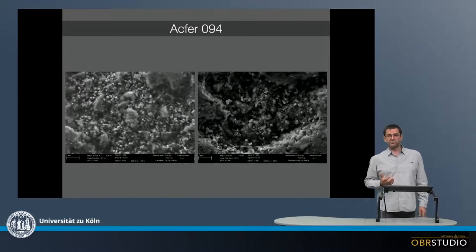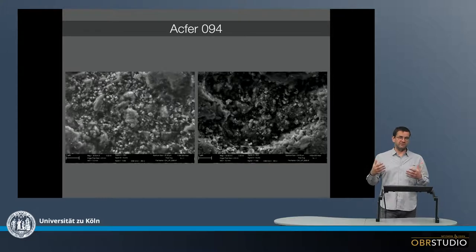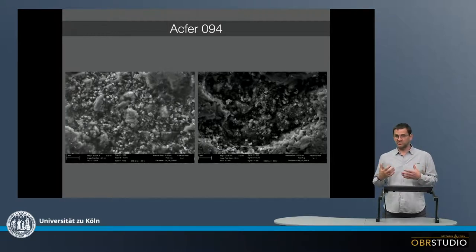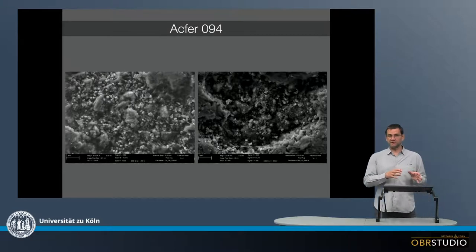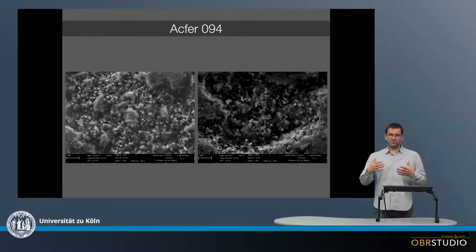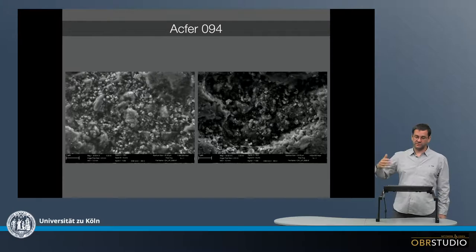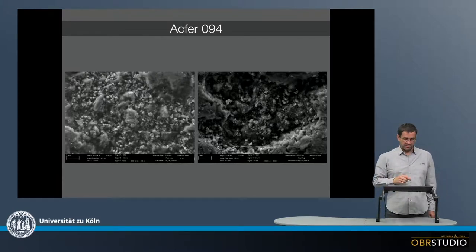Now, Acfer 094 is one of the most interesting meteorites, because it appears like this is one of the least altered meteorites, in particular the matrix, because a lot of pre-solar grains are found in the matrix. And an overprint on the parent body, whether thermal or hydrous, can easily destroy pre-solar grains. Now, in Acfer 094, there are lots of pre-solar grains, which means this might be a very pristine type of a matrix.